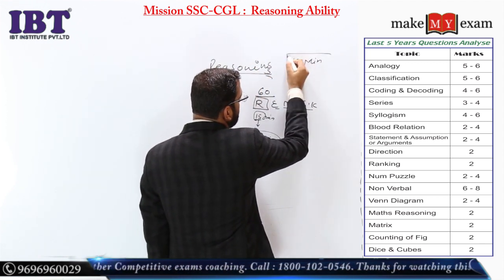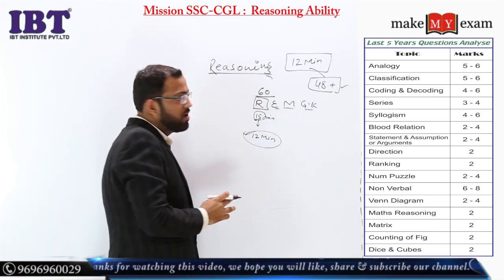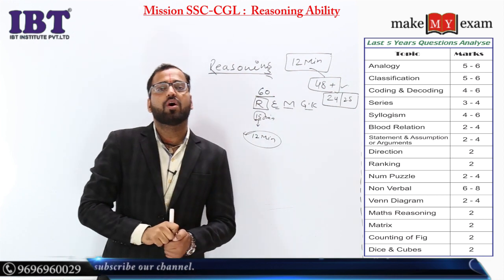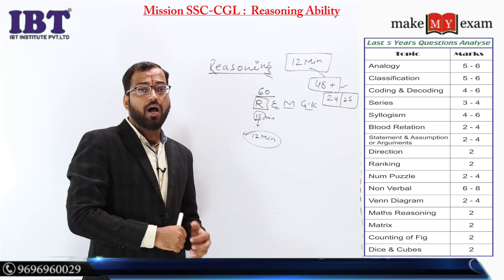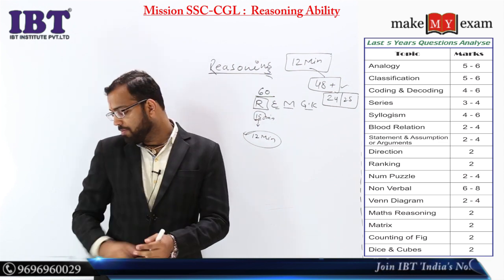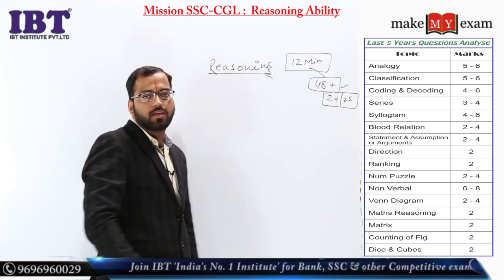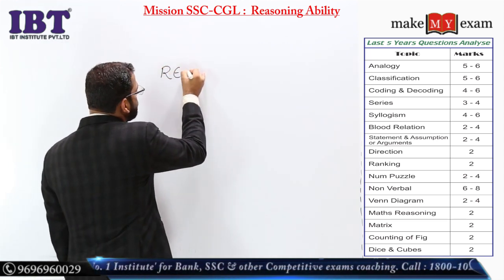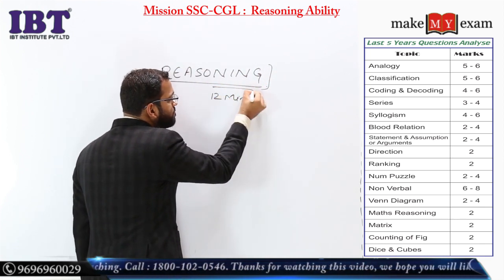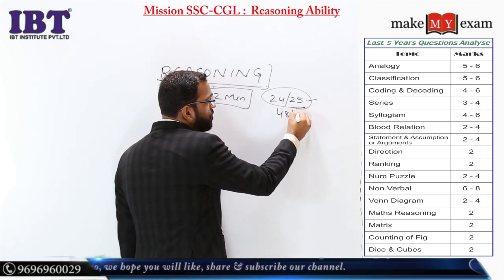Reasoning में 12 minute maximum use करने हैं और 48 plus का target लेके चलना है - यानी 48 या 50, 24 या 25 questions से कम नहीं करना। Last year CGL की pre की cut off 137 गई थी। That means minimum 48 लाना होगा। अगर आपको एक अच्छे level की job के लिए जाना है तो reasoning को perfect करना ही होगा।